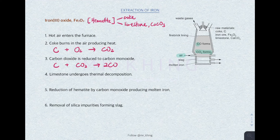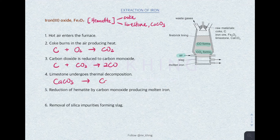Carbon monoxide is produced. Referring back to step two, coke burns in the air producing heat, so when heat is produced the temperature in the furnace increases. When the temperature increases, the limestone undergoes thermal decomposition: CaCO3 → CaO + CO2.